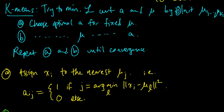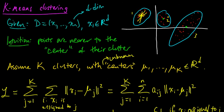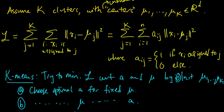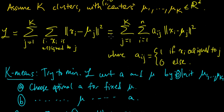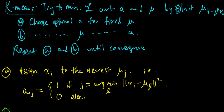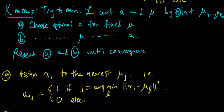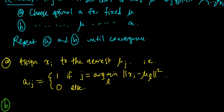In the previous video we started looking at the k-means algorithm for clustering. We had the intuition that each cluster has a center and the points in that cluster are nearer to that center. We wrote down an objective function to minimize. In k-means we alternately choose, for fixed centers, the optimal assignments, and for fixed assignments, the optimal centers — starting from randomly chosen centers. In step A we found that the optimal assignments are just the nearest center to each point.